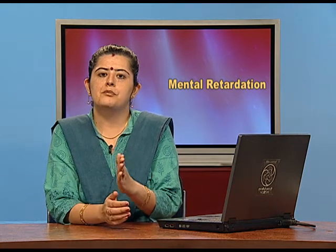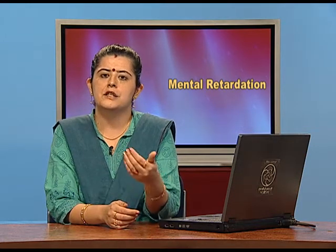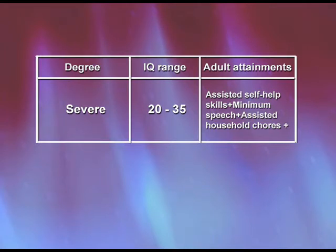Then we have the third category, which is where actual deterioration starts and these people face a lot of problems. They are not able to study, as their capacities are very limited. The IQ range is from 20 to 35 — close to the lowest category. They require a lot of assistance and are not able to manage their work independently; we don't really expect them to handle academics because their capacity is limited.